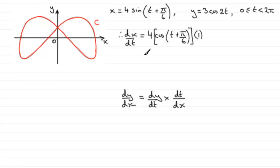So when tidied up, this is going to be 4cos of t plus pi upon 6. And so that means that dt by dx will just be 1 over this value.